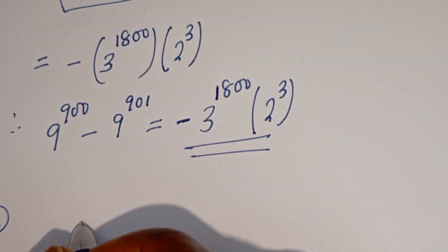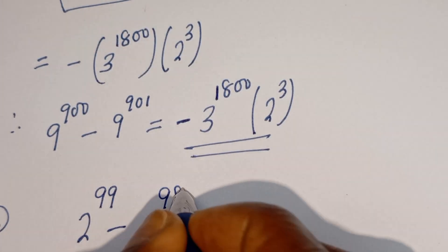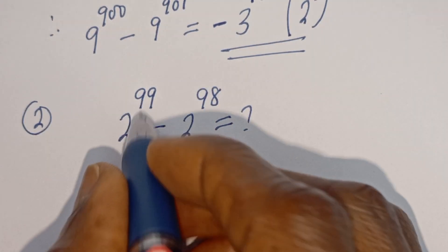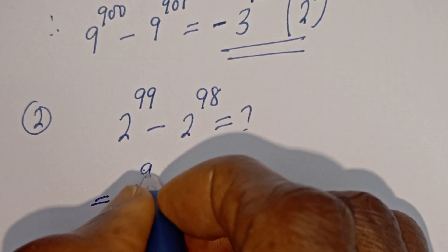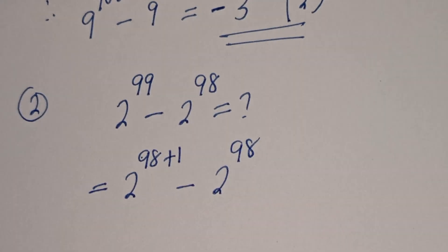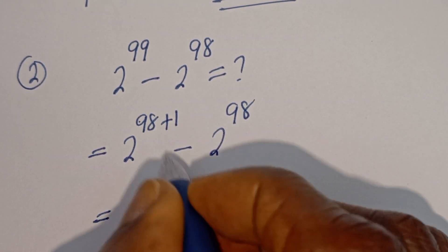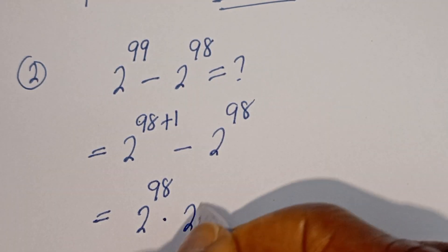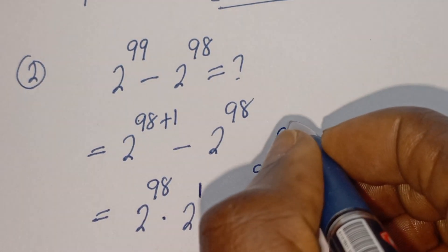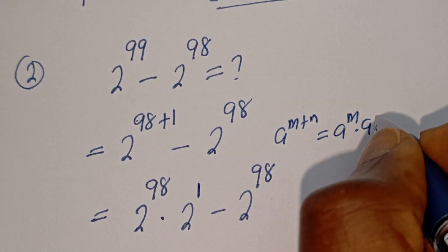Let's also try this. If you have 2 to the power of 99 minus 2 to the power of 98, what is the answer? This can be written as 2 to the power of 98 plus 1 minus 2 to the power of 98. That is from the rule: a to the power of m plus n is equal to a to the power of m multiplied by a to the power of n.